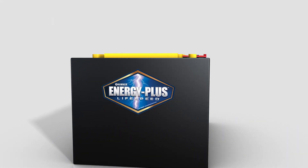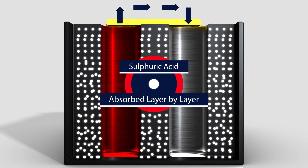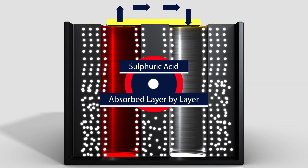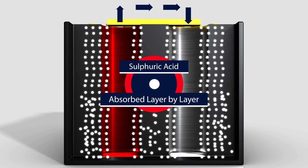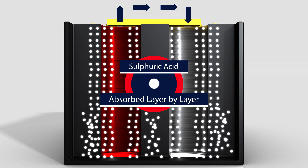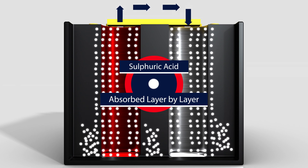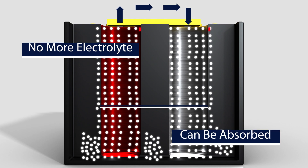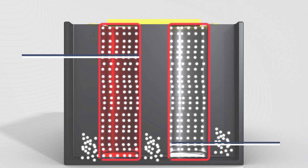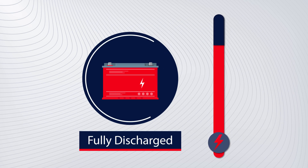As electrical current is demanded, sulfuric acid is absorbed layer by layer into the active material plates, producing the chemical reaction that changes the chemical composition of the active material and delivers electrons. This reaction continues until the plates are saturated and the chemical composition of the active material changes. No more electrolyte can be absorbed. At this stage, the battery is considered to be fully discharged and will need to be recharged.